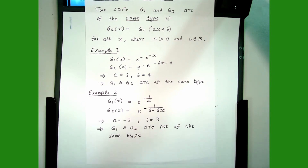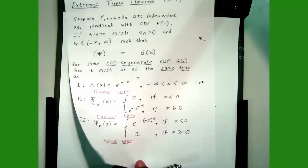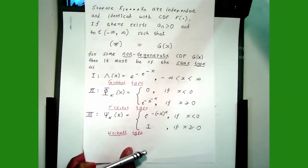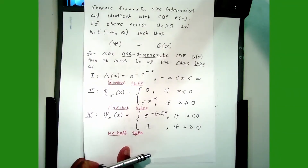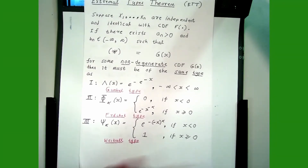So those are two examples illustrating what I meant by same type. Going back to the Extremal Types Theorem: what it says is that if the limit exists, then for a non-degenerate CDF G, G must be of the same type as one of the three classes — the Gumbel type, the Fréchet type, or the Weibull type.